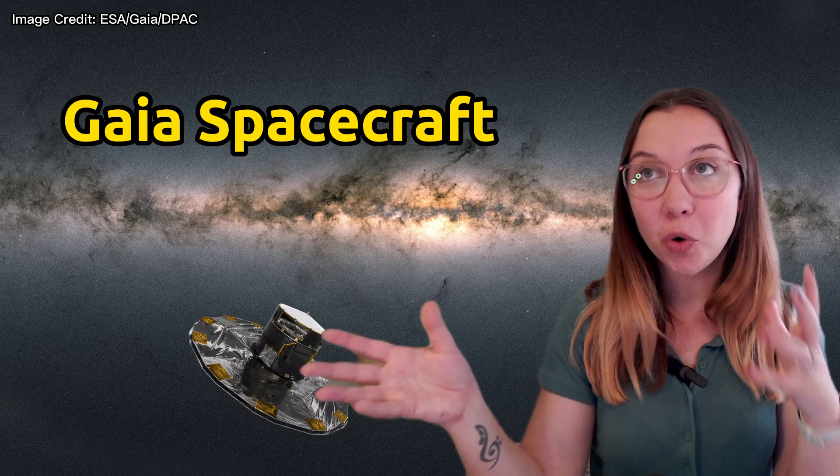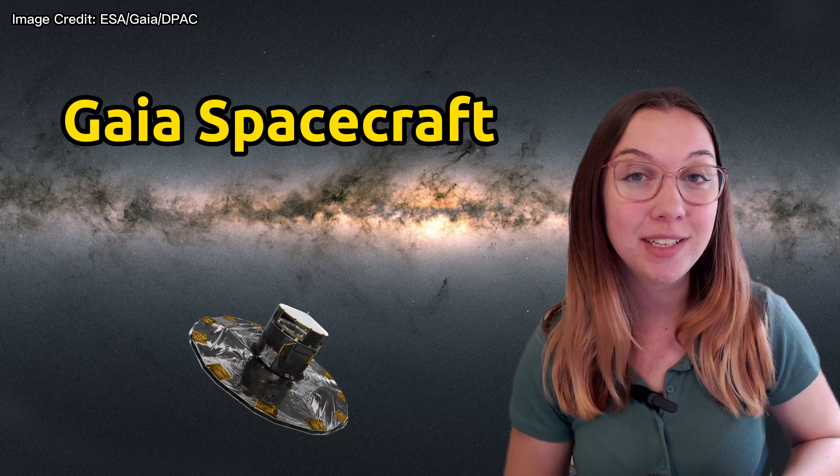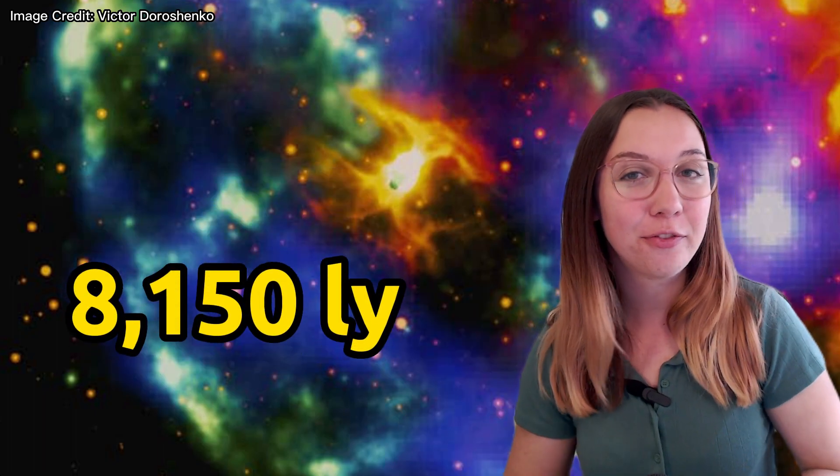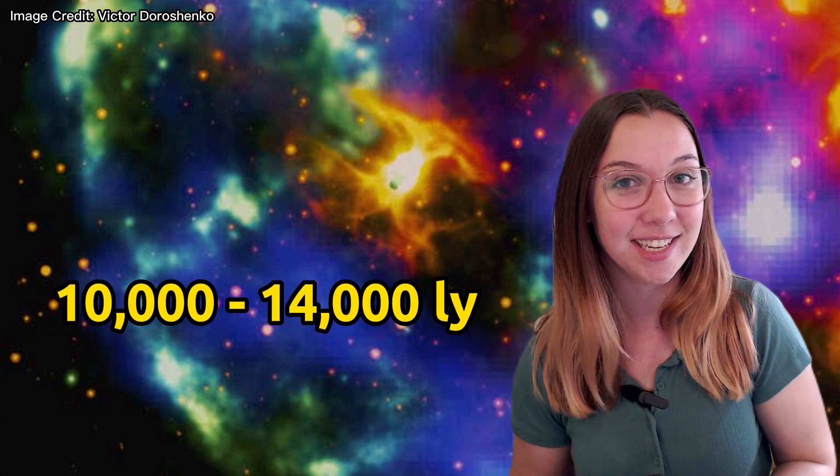But recently another star was found hanging out with this potentially strange star. And with the help of the Gaia spacecraft which is notorious for finding accurate distance measurements, the distance estimate to this neutron star or strange star was refined to 8,150 light years whereas beforehand it was ranging between 10,000 and 14,000 light years. Which then reduced the estimate of the mass to just 77% the mass of the Sun.